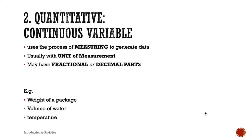The unit of measure must always be included, as the result may have a different value depending on the unit. In contrast, with discrete variables the value remains the same regardless — five chairs and five students are both simply five. But three inches is different from three meters, which is different from three centimeters, so always include the unit of measure.